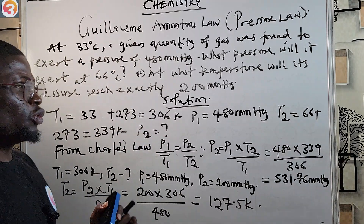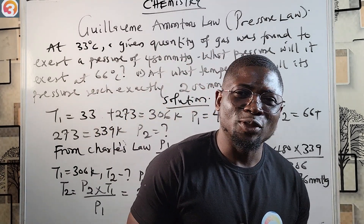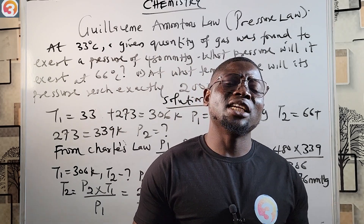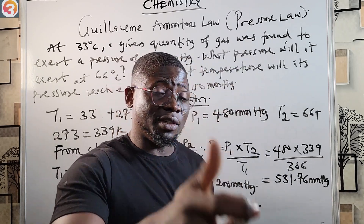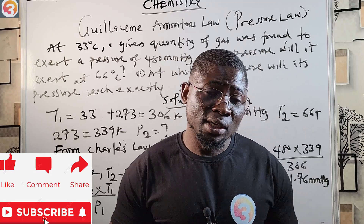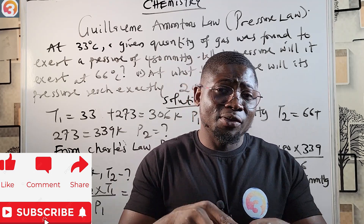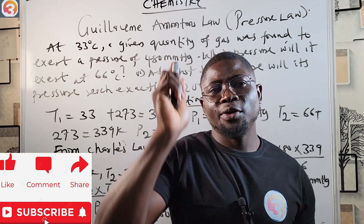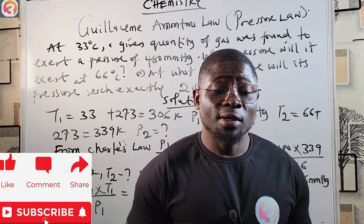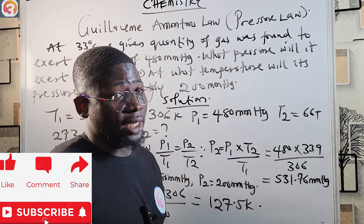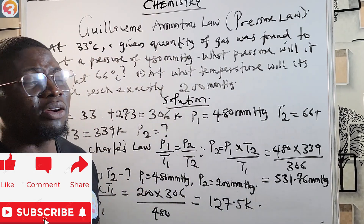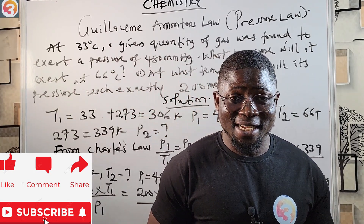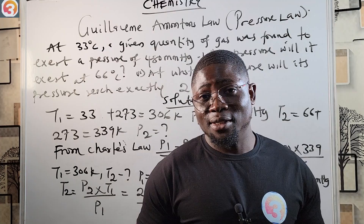Substituting: T2 = 200 × 306 / 480, which gives 127.5 Kelvin. That's how we use the formula to solve the question very easily once you understand the law. Please like this video to help other students find it, subscribe by clicking the red subscribe button, and share with your friends and classmates. Thanks for watching — my name is MC.